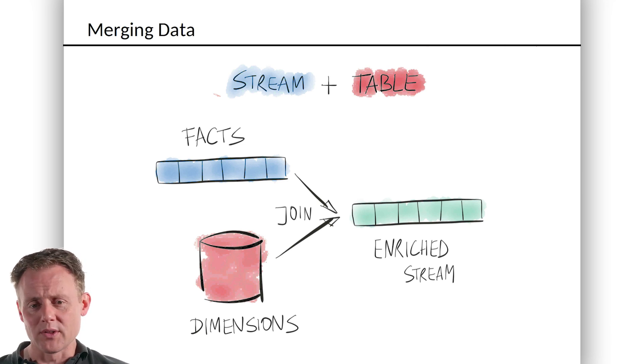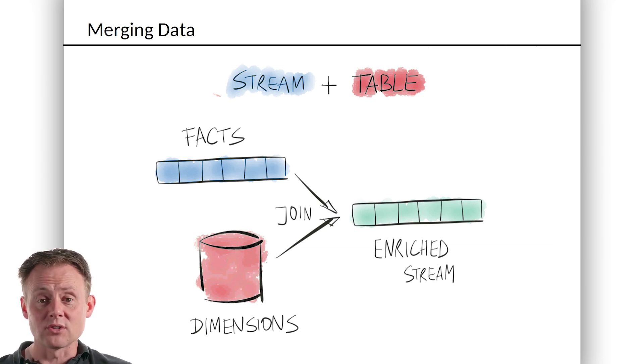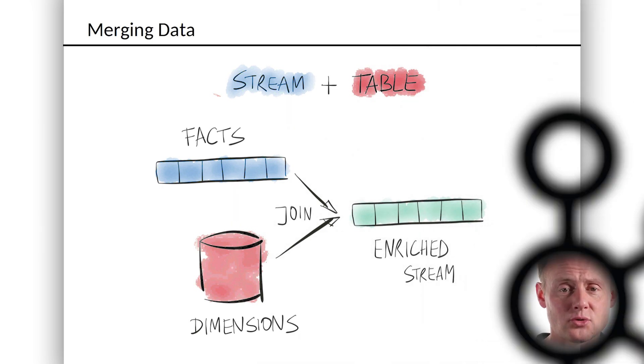I'm not going to walk you through all the steps of how you might create that, but elsewhere in the system, there's going to be a stream of song updates, and we're going to materialize that into a K table. And we'll be able to join those two things, effectively enriching that play event data with the song data, creating an enriched stream.